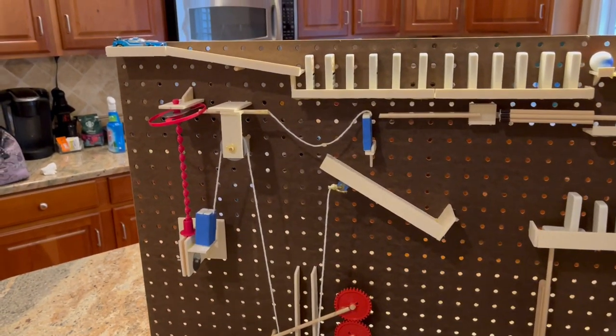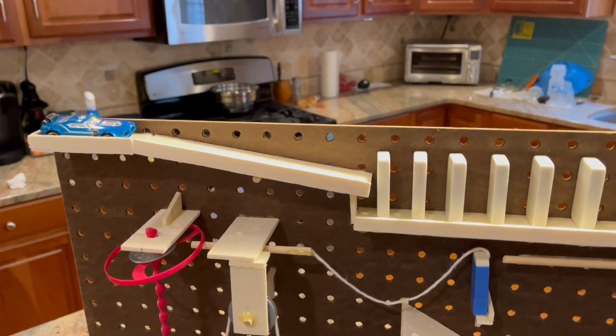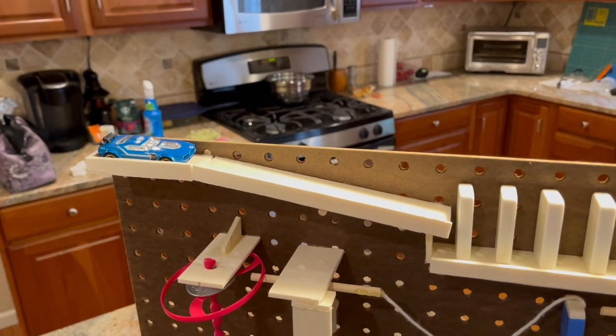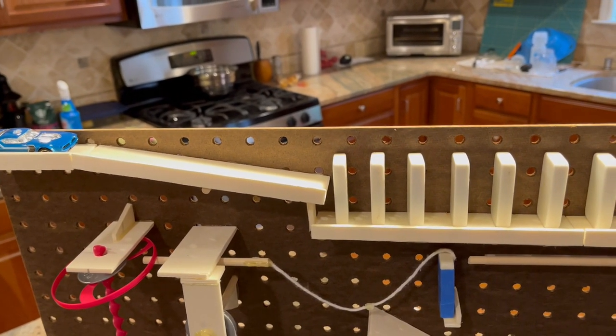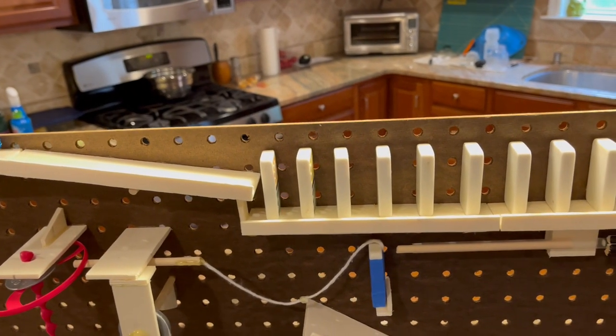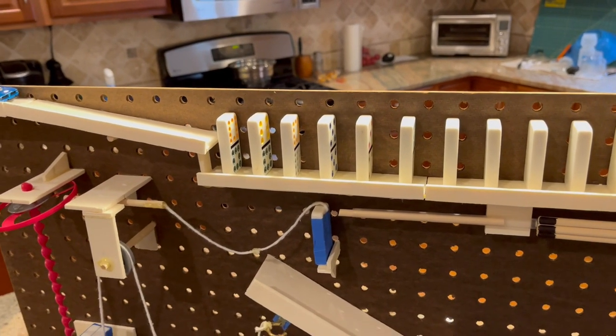The machine starts with a matchbox car on a level platform. The only human interaction needed is to push the car forward off the platform. The car starts with gravitational potential energy that accelerates the car towards the dominoes at the bottom of the incline. The kinetic energy of the car is transferred to the first domino on impact.